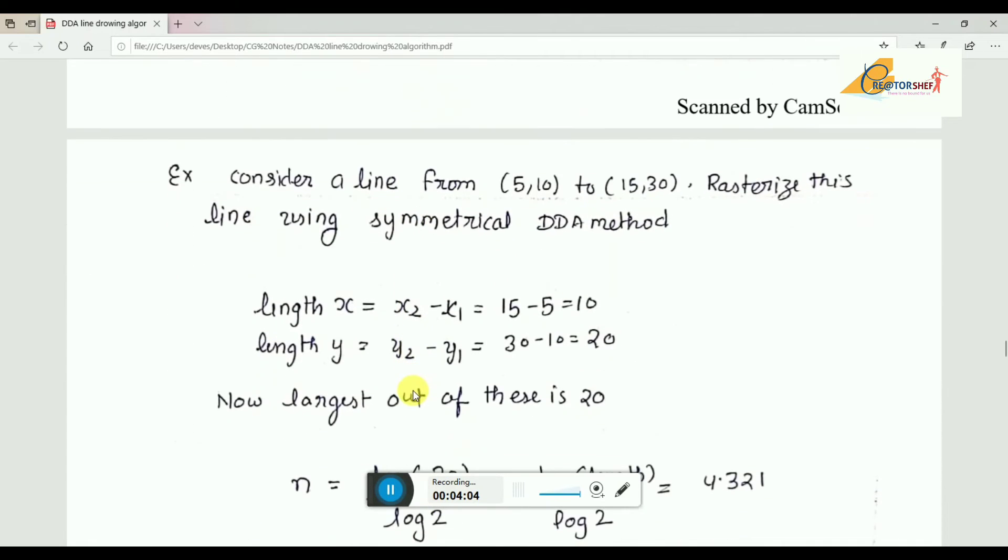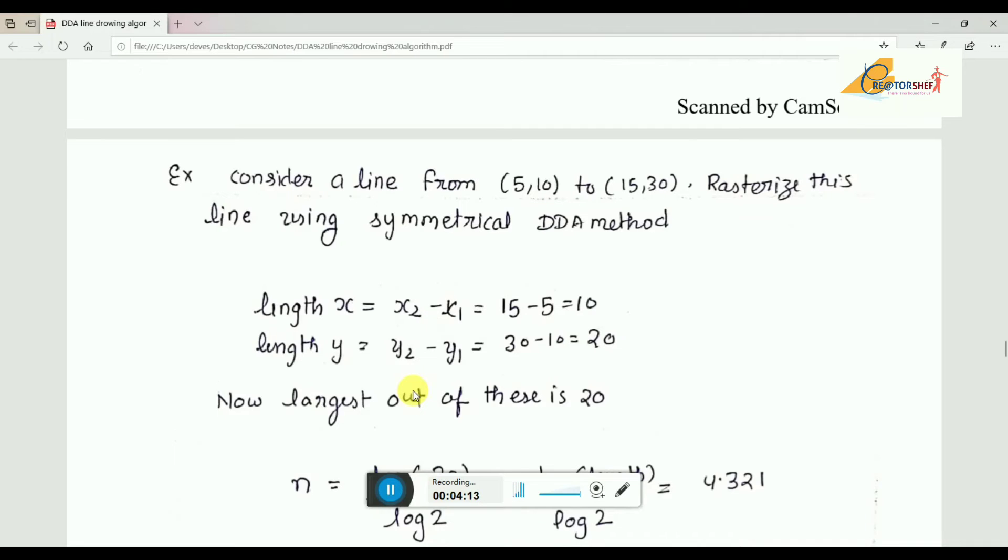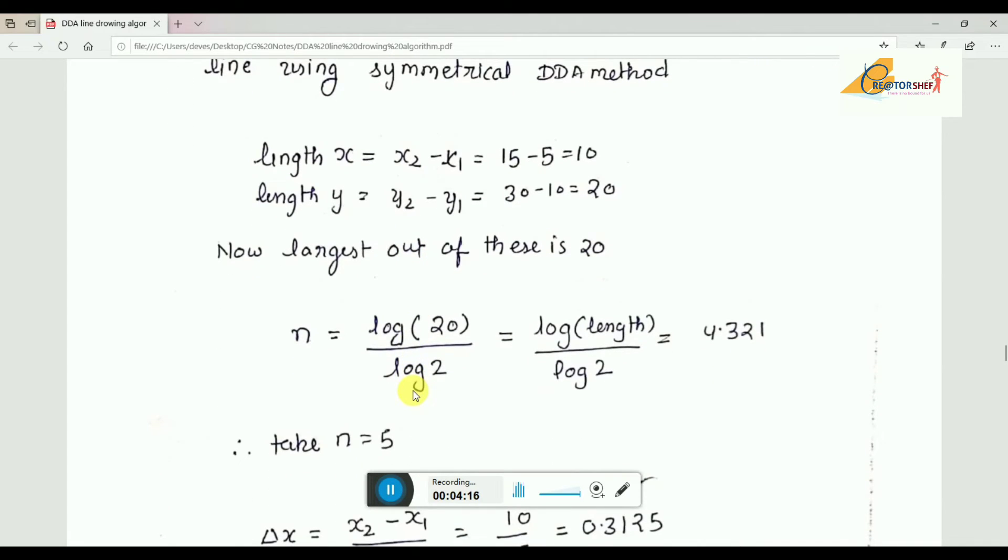So consider a line from (5, 10) to (15, 30). We have to make use of symmetrical DDA method. In that case, Δx = x2 - x1 and Δy = y2 - y1. So here there is 10 or 20, which is larger. The largest value is Δy = 20, so the length we choose is 20.